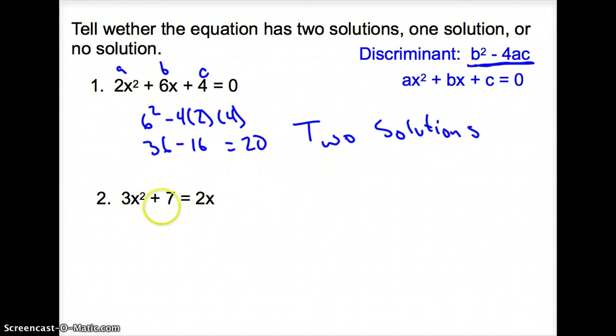Let's go on to the next one. 3x² plus 7 equals 2x. It is not quite in the standard form of a quadratic equation, so we have to set it up like that. Let's get that 2x to the other side. We subtract 2x from the right side and put it on the left. So now we can write it in standard form: 3x² minus 2x plus 7 equals 0.